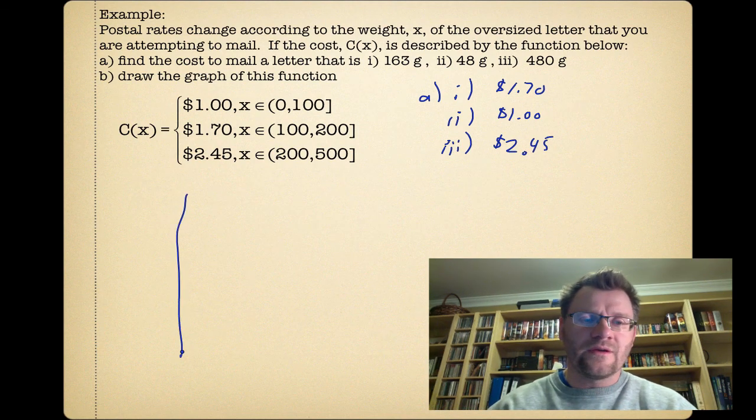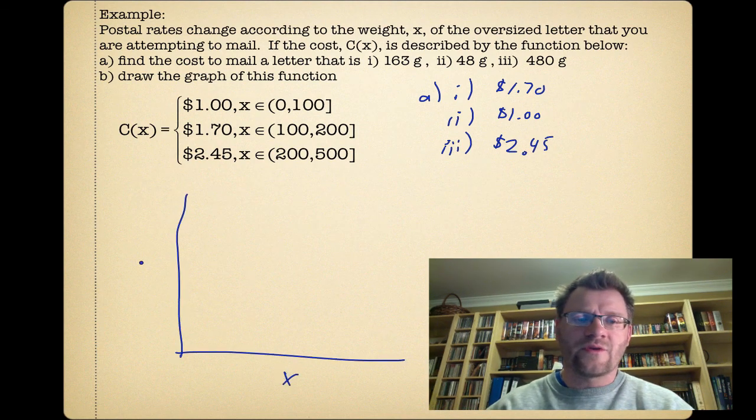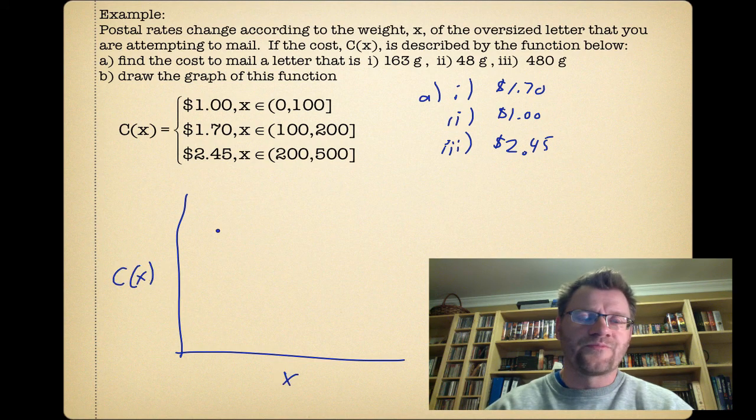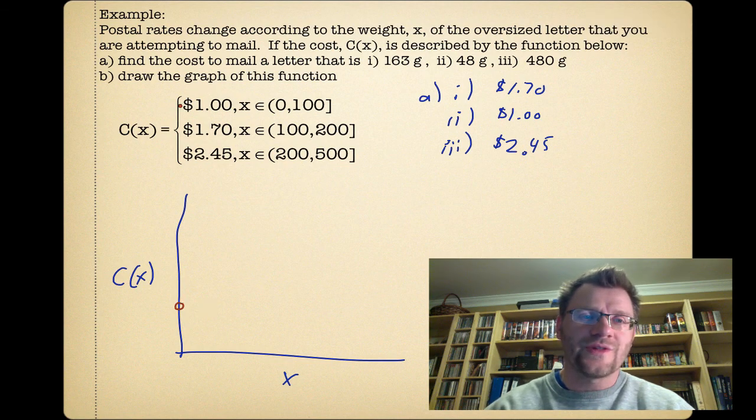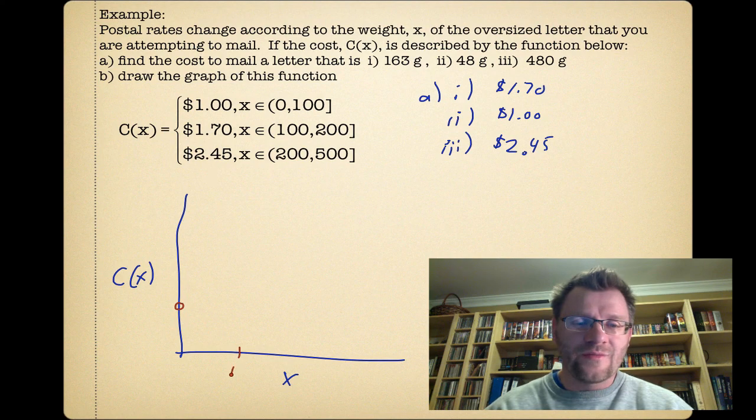So if we're to graph this thing, we're going to have x over here, we're going to have c(x) over there. We know that at a certain value from 0 to 100, it's only $1 worth. So it doesn't matter, zero, non-inclusive, because you're not going to get charged for a letter that has no mass, because that means that letter does not exist. So from 0 to 100, it is going to cost $1.